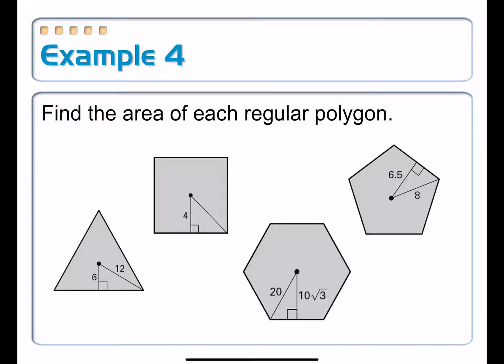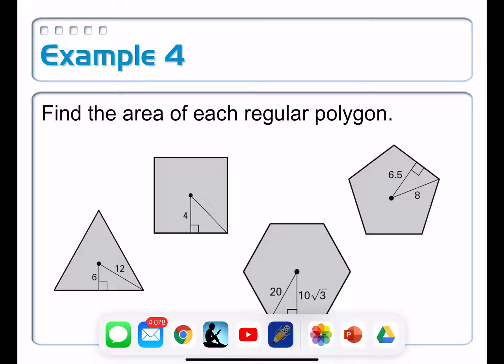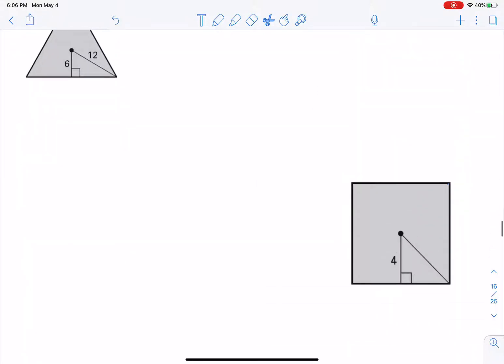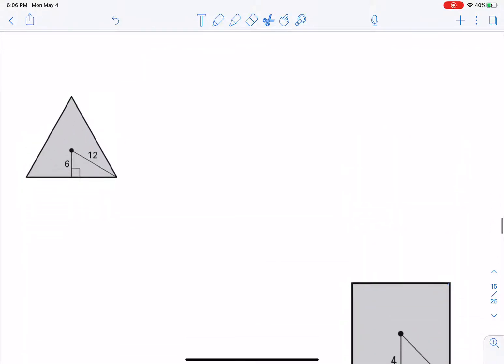On example four, we want to find the area of each of these regular polygons. So we have a regular triangle, otherwise known as an equilateral triangle, regular quadrilateral, a square, a regular hexagon, a regular pentagon, and each of them gives us maybe the apothem length, maybe the radius length, something like that. We want to be able to find the area using our nifty formula. Area is equal to one-half the apothem length times the perimeter. So I have conveniently copied this down here, so I have enough room to actually work each one of these problems on example four.